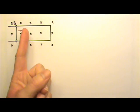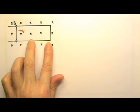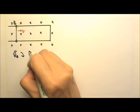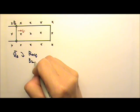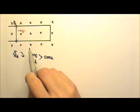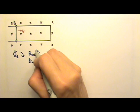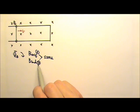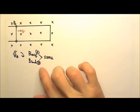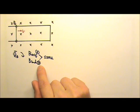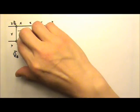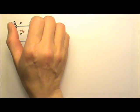When the conducting bar slides to the right, the area of the loop decreases, so the magnetic flux decreases. That means the original magnetic field and the induced current's magnetic field must be in the same direction. The original magnetic field goes into the paper, so the induced current should also produce a field into the paper, giving us a clockwise current.